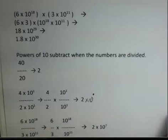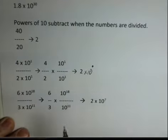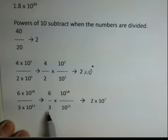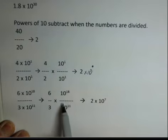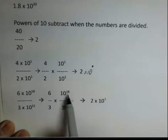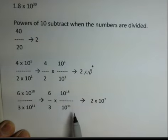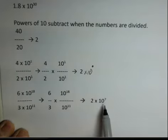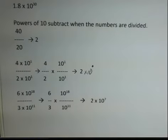With bigger numbers, bigger exponents, 6 times 10 to the 18th divided by 3 times 10 to the 11th. Group the 6 divided by 3 separately from 10 to the 18th divided by 10 to the 11th. 6 divided by 3 is a 2. 10 to the 18th divided by 10 to the 11th. We subtract 11 from 18, I subtract the exponent in the denominator from the exponent in the numerator. I end up with 2 times 10 to the 7th. And perhaps you should pause the video and try these with your calculator.